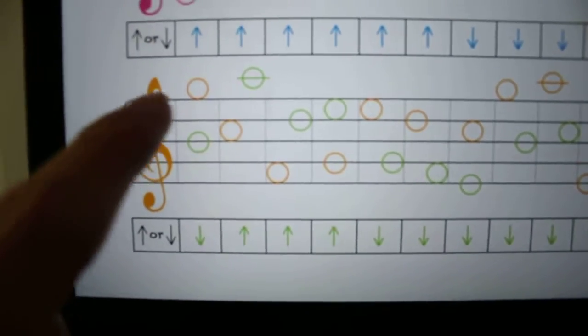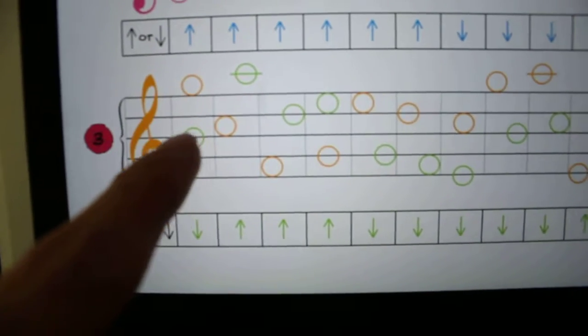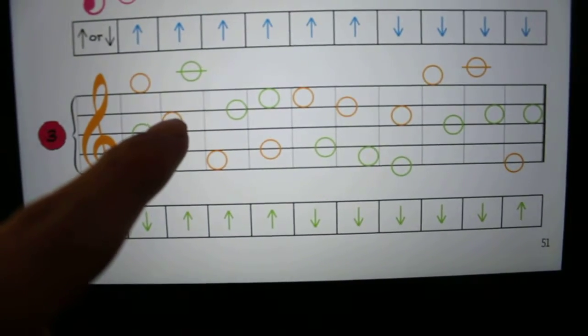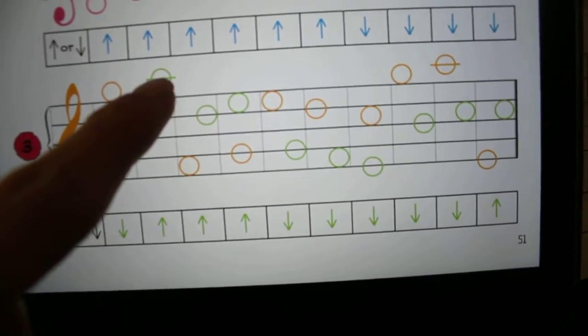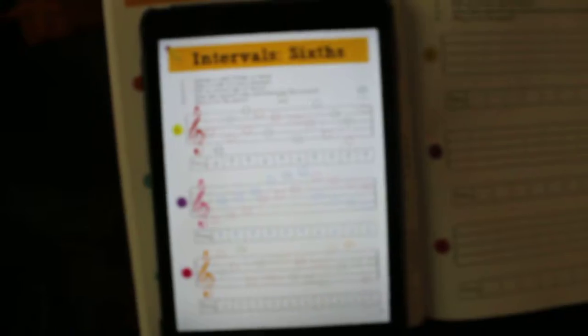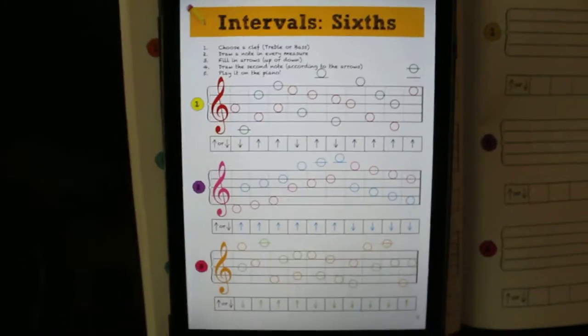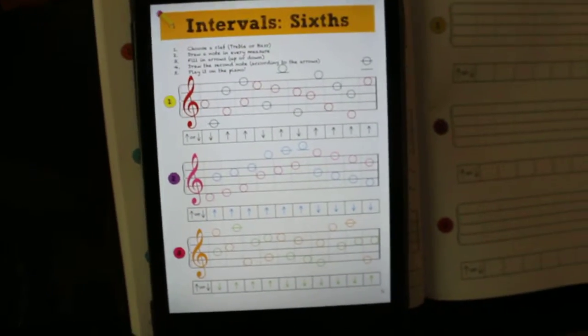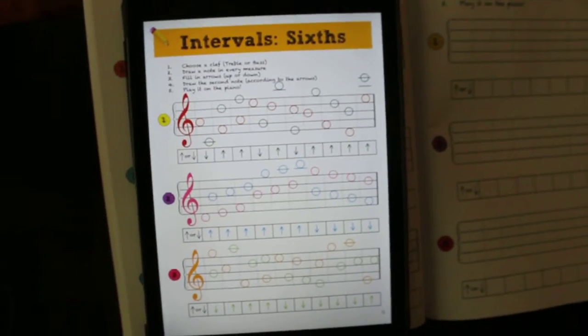And then draw the sixth accordion. Okay, space. That means it's a line. So you go one, two, three, draw. Okay, space, so it has to be a line. One, two, three. So you draw on the third one. So if you guys have little tricks to help them understand how to draw intervals, feel free to send me some tips too. I'm always looking for new ways to teach stuff. Okay, bye.